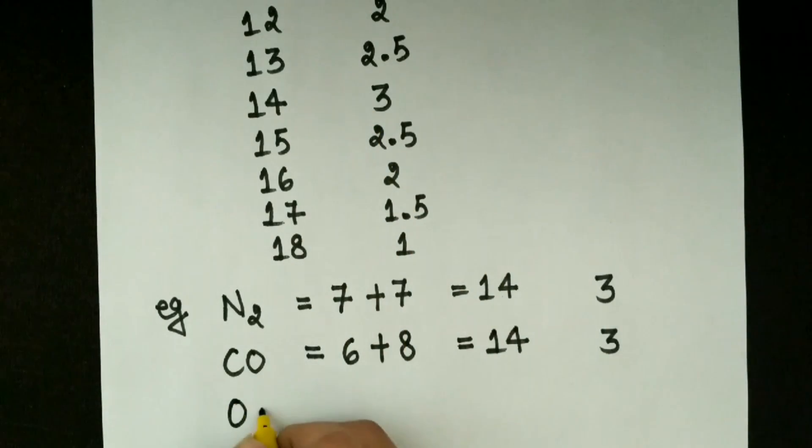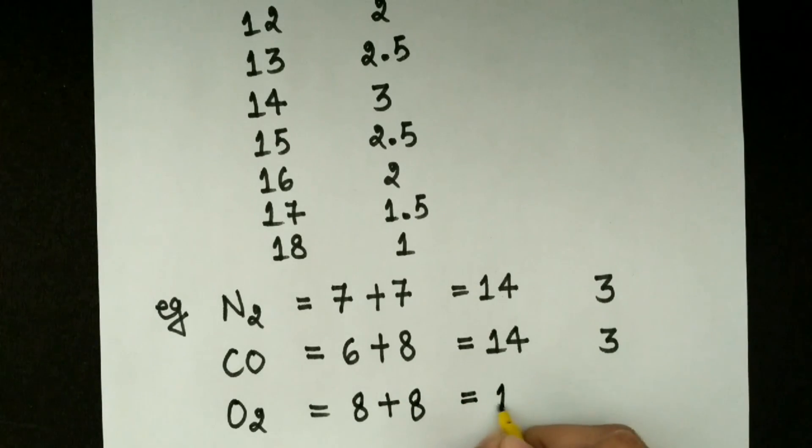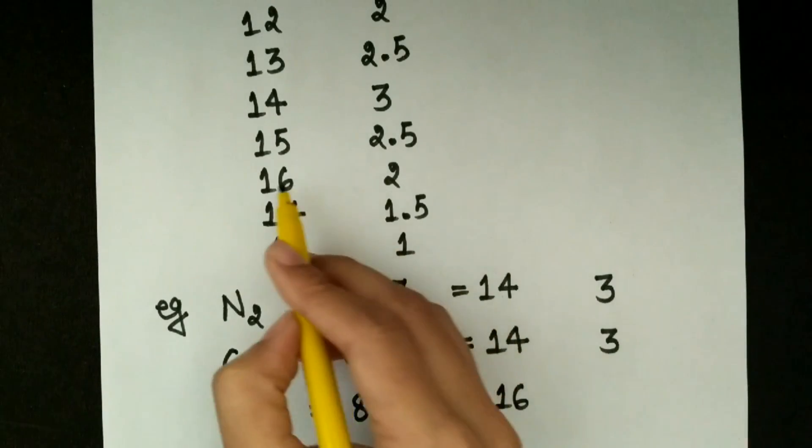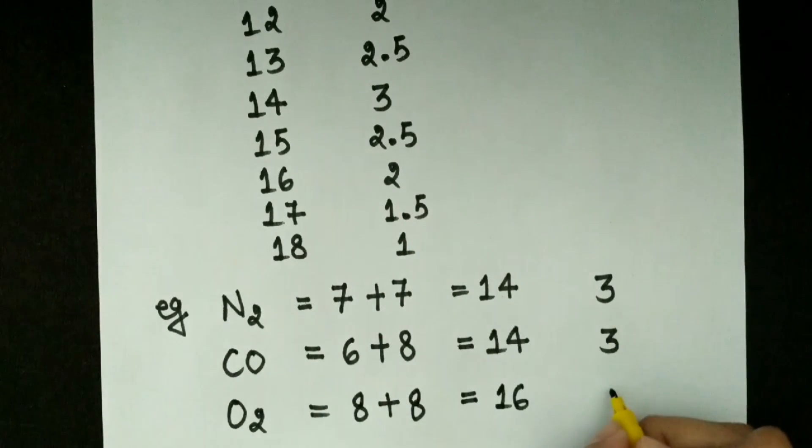Just like that, take an example for O2, that is oxygen. As we know oxygen has 8 electrons. And here we have 2 atoms of oxygen. So write 8 plus 8. So its sum is going to be 16. So for 16 we have bond order 2.